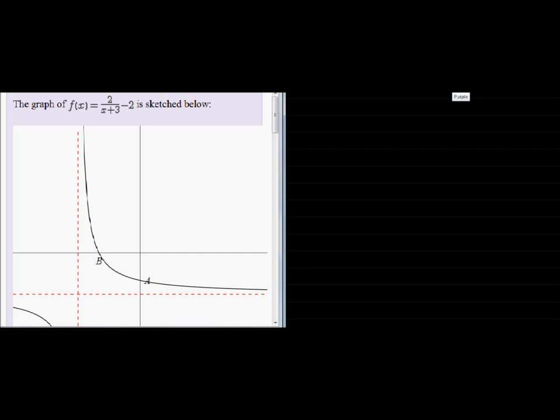Now we know that the denominator of a fraction, x plus 3 is the denominator, may not equal 0. Which means that x may not equal negative 3.